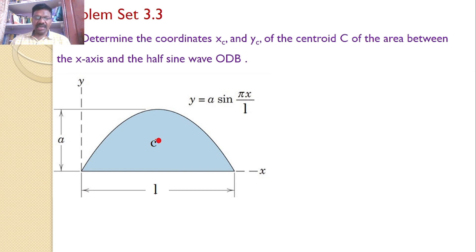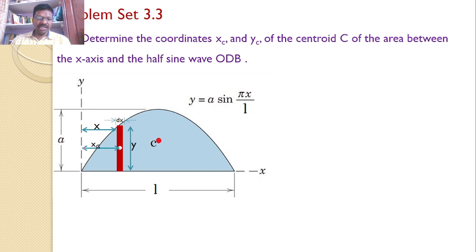To calculate the centroid, I will consider a small rectangular strip at a distance x from the y-axis, with width dx. Let the height of the strip be y. The centroid of the rectangular strip is exactly at the center, at distance xg from the y-axis and yg from the x-axis. First, we will calculate xg and yg, then integrate over the entire area.